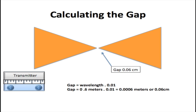The next important dimension is the small gap between the elements. This gap is critical for proper feeding and impedance matching. The gap should be one to two percent of the full wavelength. Using one percent: gap equals 0.6 meters times 0.01 equals 0.006 meters, or 0.06 centimeters.